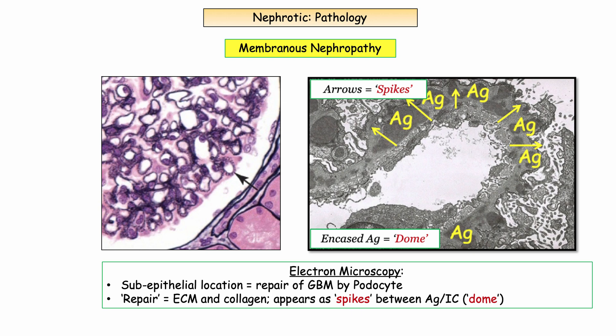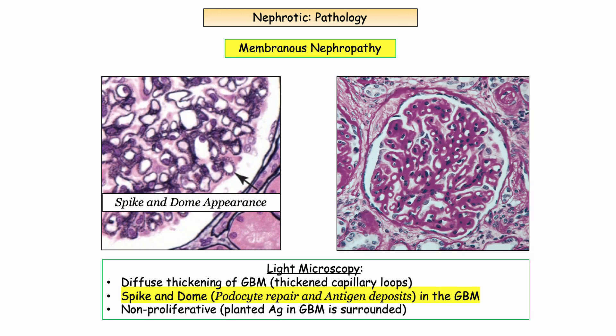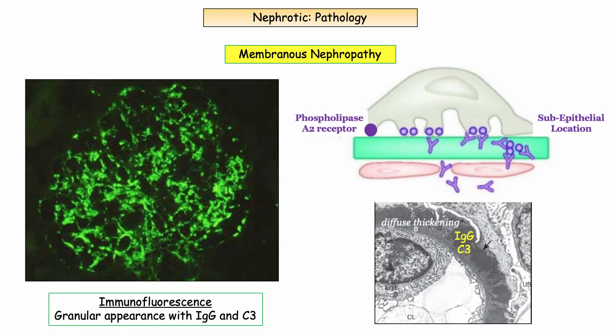The podocyte repair effort results in production of extracellular matrix and collagen, creating finger-like projections between the deposits — referred to as spikes — with a dome-like appearance as the matrix surrounds the immune deposits. This accounts for the classic spike and dome appearance. On light microscopy with a special silver stain, the spikes are visible as the deposits and dome do not take up the stain. The other key microscopic description is diffuse thickening of the glomerular basement membrane and thickened capillary loops. Importantly, there is no proliferative response despite being immune-complex mediated.